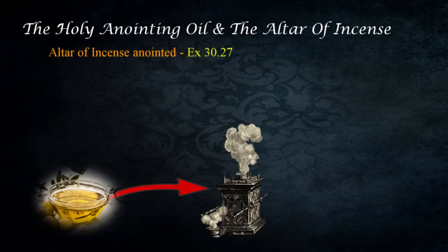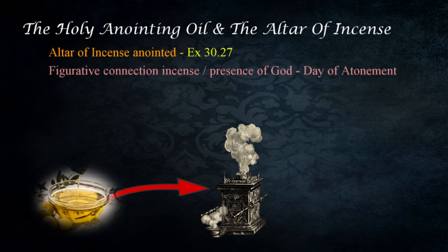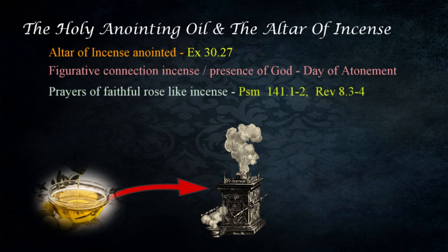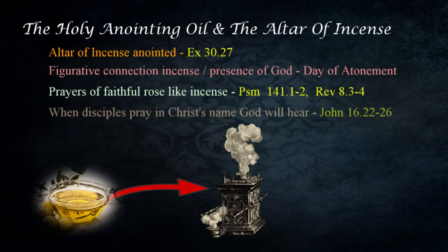The altar of incense was also anointed with the holy anointing oil in Exodus 30:27. There is a figurative connection with the incense and the presence of God on the Day of Atonement, and also a connection with the prayers of the faithful. The prayers of the faithful rose like incense before the Lord in Psalm 141:1–2, and figuratively incense accompanied the prayers of the saints in Revelation 8:3–4. Christ told his disciples that when they prayed to the Father in his name, God would hear their prayers — John 16:22–26.